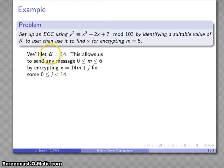With k = 14 working mod 103, my messages have to be between 0 and 6. For a message between 0 and 6, I'll pick x = 14m + j, where j is between 0 and 14.